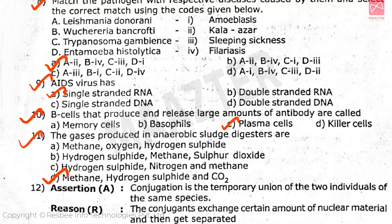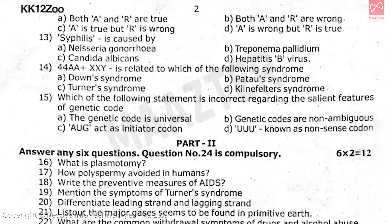Question 12: Assertion and Reason. Assertion: Conjugation is the temporary union of two individuals of the same species. Reason: The conjugants exchange a certain amount of nuclear material and then get separated. The answer is option A.